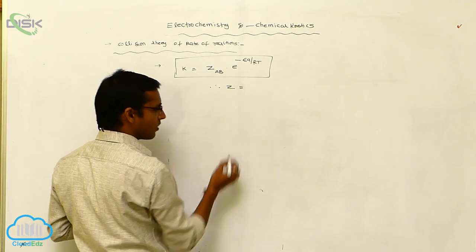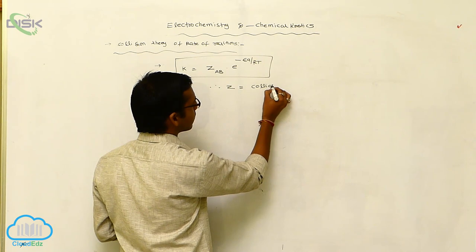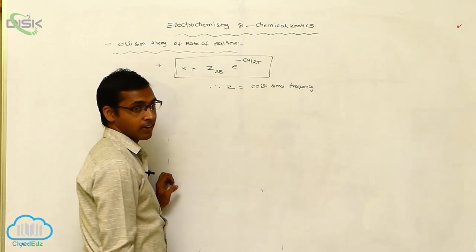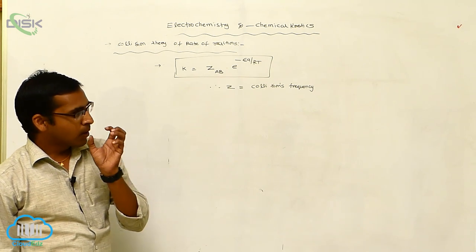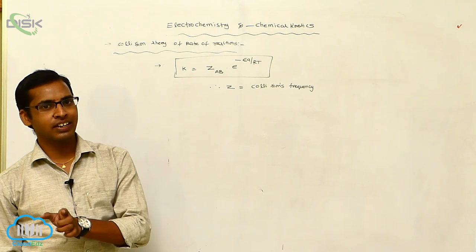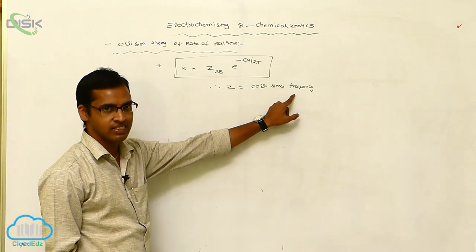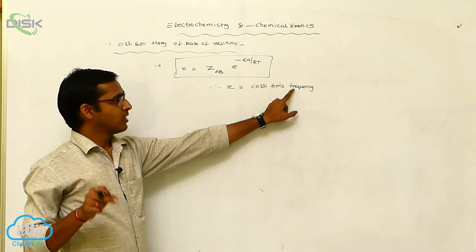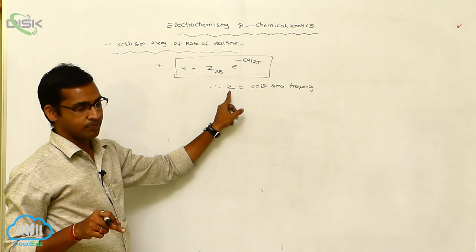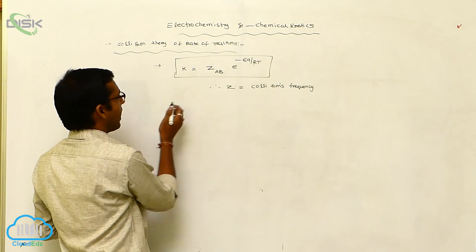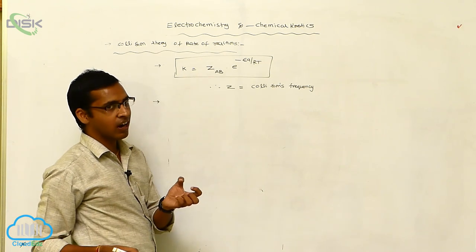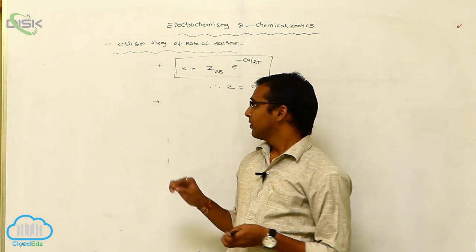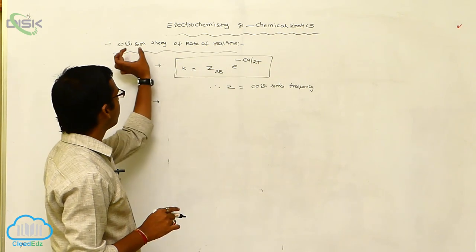In this equation, Z is called the collision frequency or collision factor — it represents the number of collisions taking place per unit time in a chemical reaction. The collision frequency is denoted by Z. Activation energy is the minimum amount of energy required for association of a molecule, also called threshold energy.